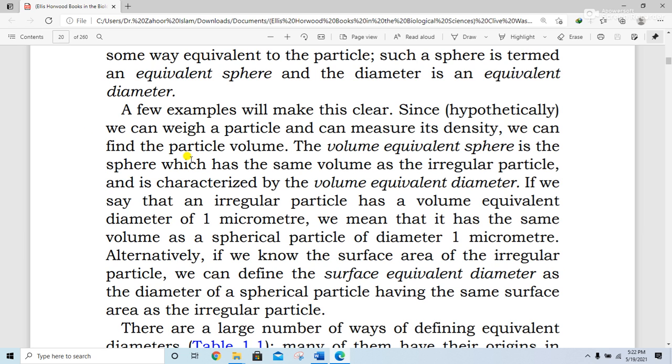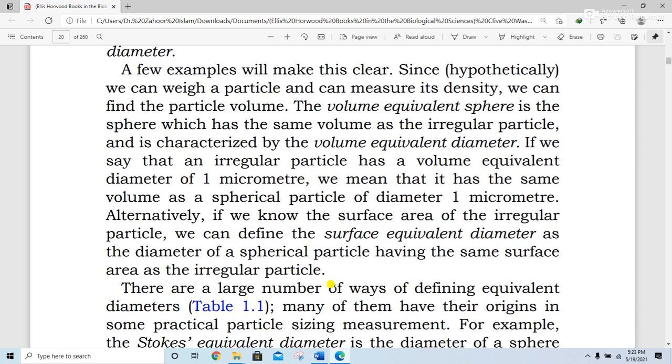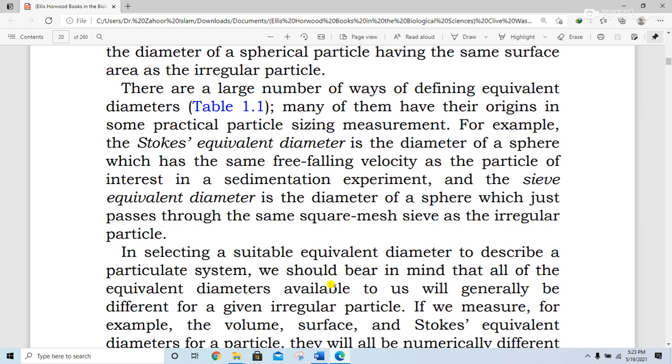Hypothetically, we can weigh the particle and measure its density, so we can find the particle volume. The volume equivalent sphere is the sphere which has the same volume as the irregular particle and is characterized by the volume equivalent diameter. If we say an irregular particle has a volume equivalent diameter of 1 micrometer, we mean that it has the same volume as a spherical particle of diameter 1 micrometer. Alternatively, if we know the surface area of the irregular particle, we can define the surface equivalent diameter as the diameter of a spherical particle having the same surface area as the irregular particle.